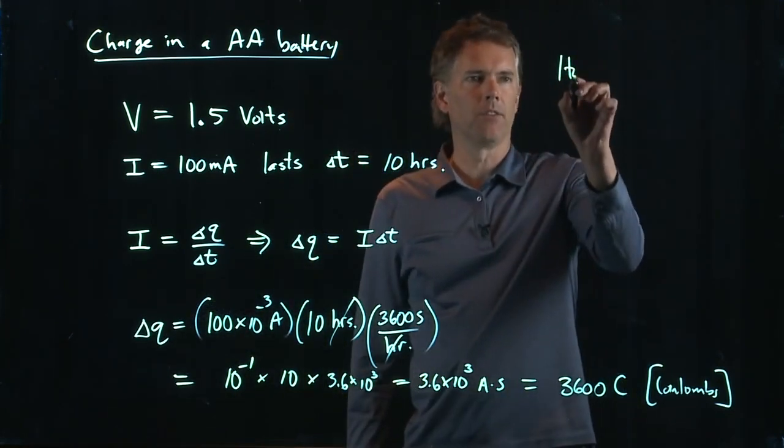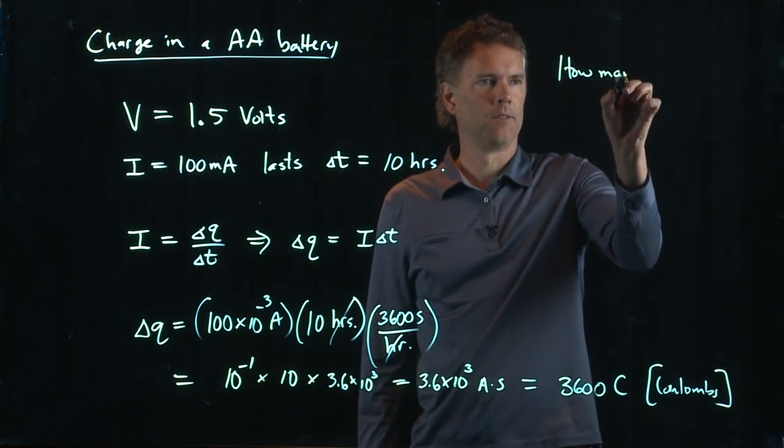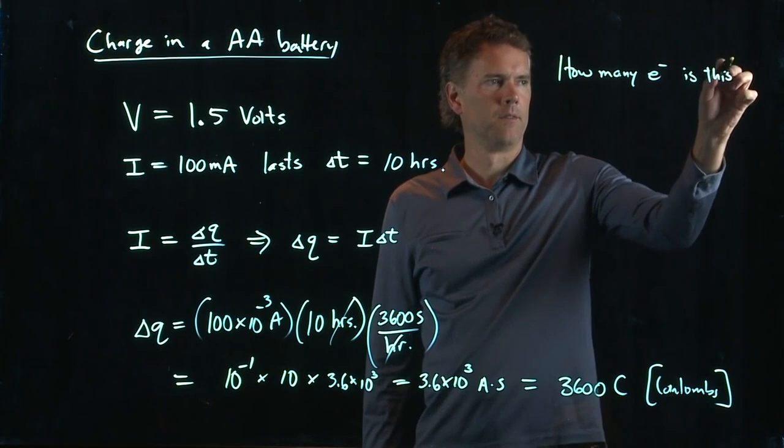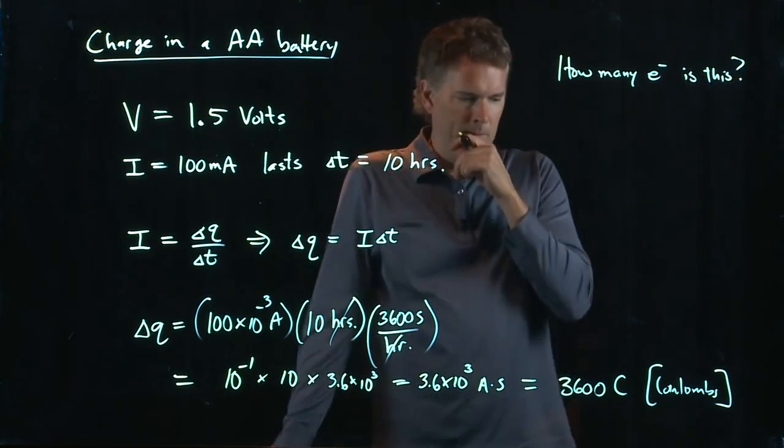So 3,600 coulombs of charge in a AA battery that is available for your use. How many electrons is that?